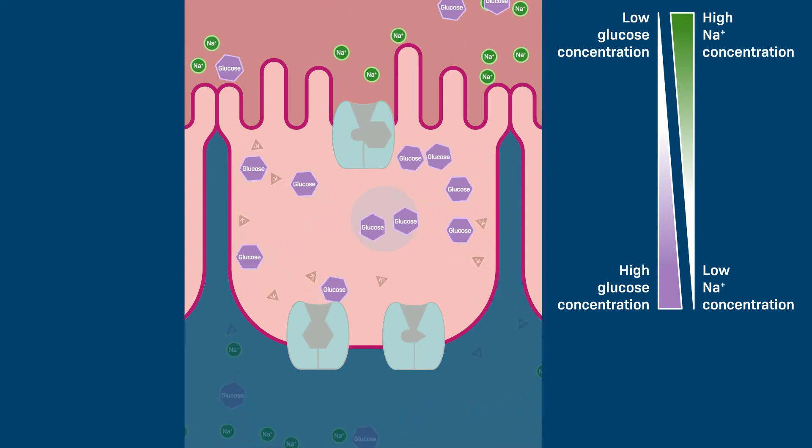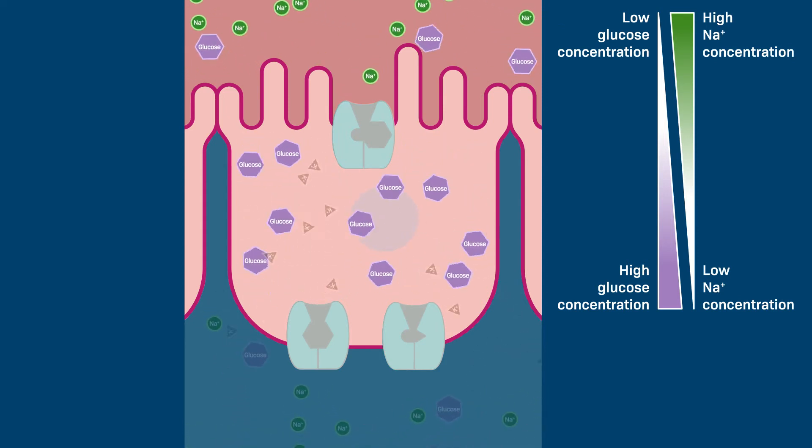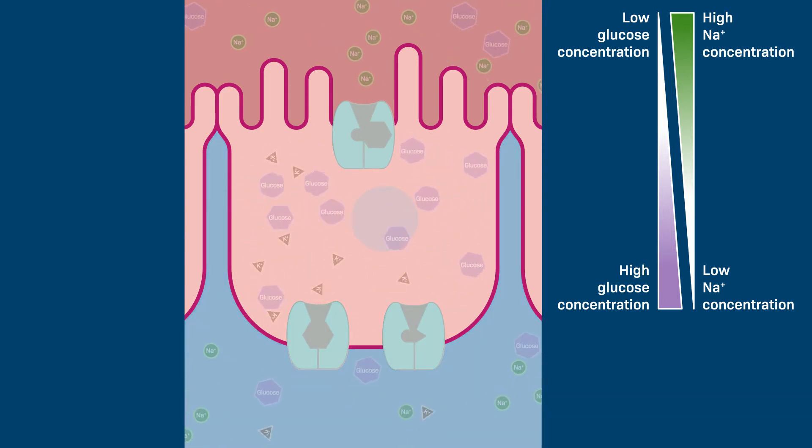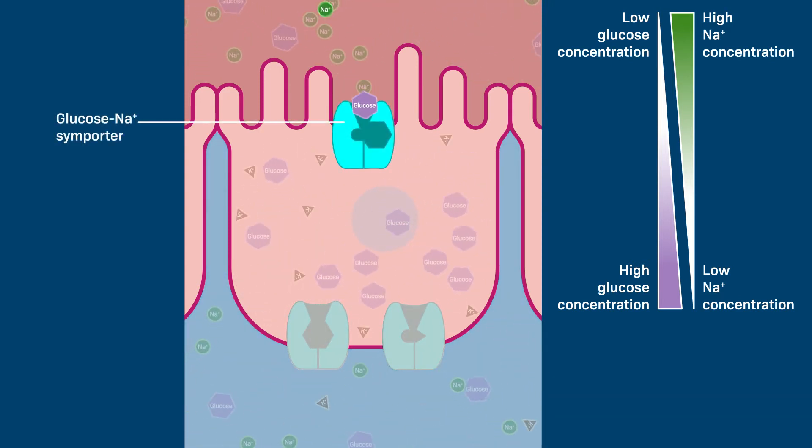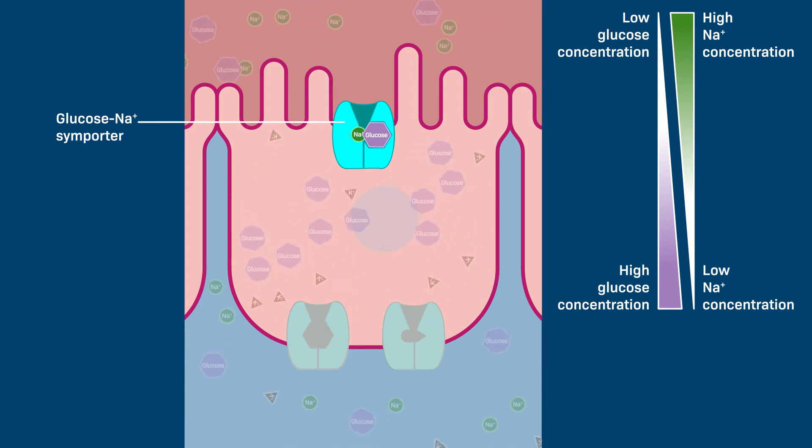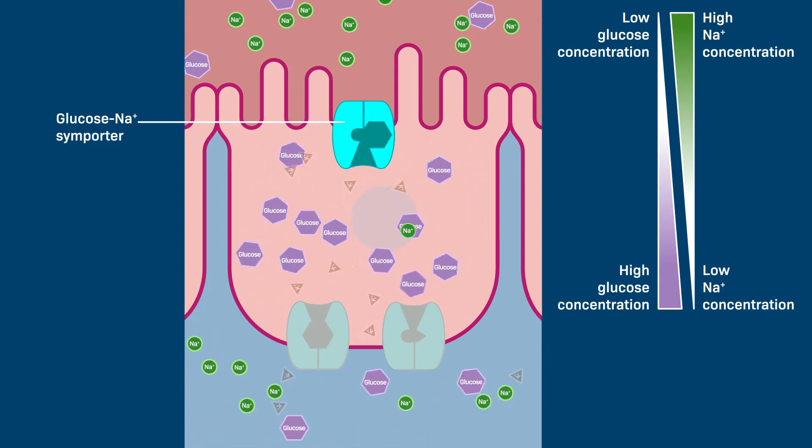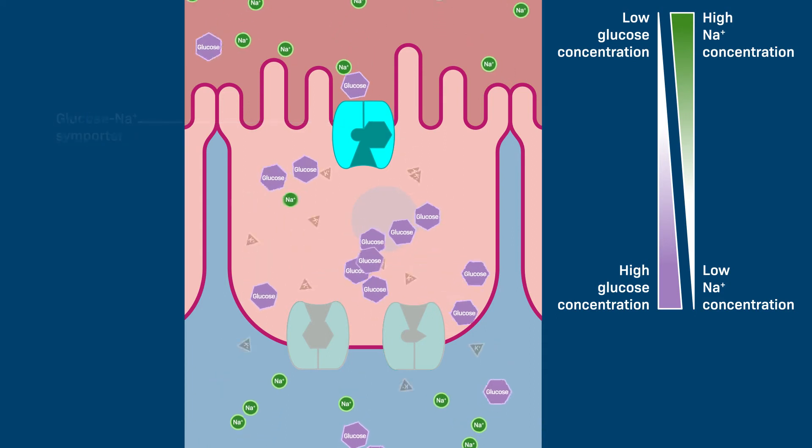Note that the sodium concentration gradient is reversed. There is much more sodium outside the cell than inside. This allows a glucose-sodium symporter to use the energy stored in the sodium gradient to pump glucose into the cell. Moving the sodium ions down their concentration gradient provides the energy necessary to pump the glucose molecules against their gradient.